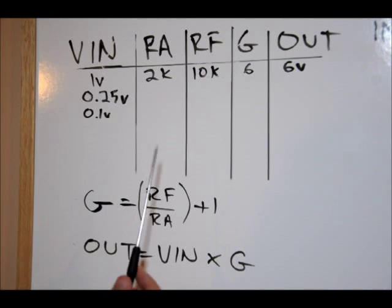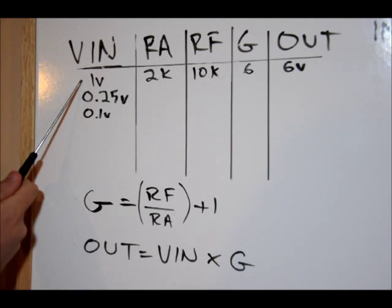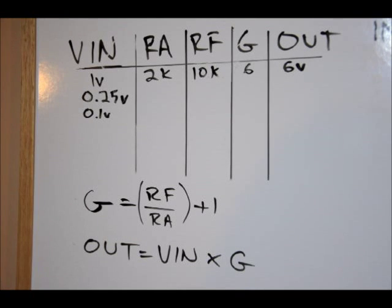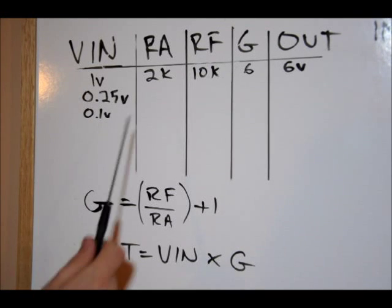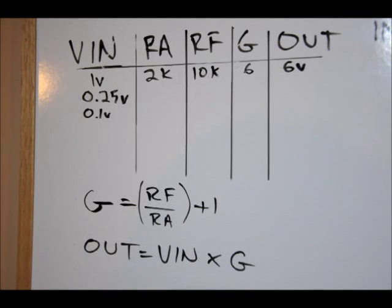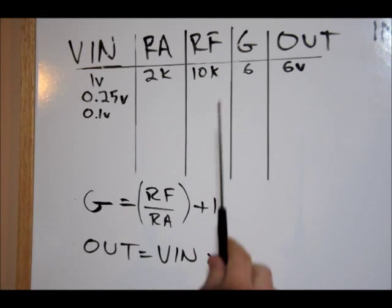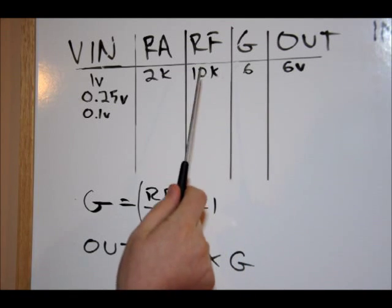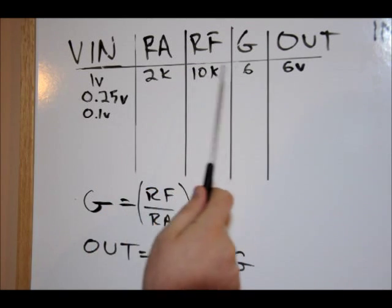In the case of our first example, our Vin, our voltage at our positive input is 1 volt. Our RA value is 2k, 2,000 ohms. RF is 10,000 ohms, 10k. Our gain is 6 because 10 divided by 2 plus 1 is 6.